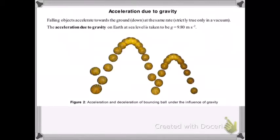Moving on to acceleration due to gravity. Falling objects accelerate towards the ground, and we define down as the direction of the force of gravity towards the centre of the earth. And falling objects accelerate towards the ground at the same rate. This is strictly true only in a vacuum, because air produces friction against any falling object. That friction is called air resistance.